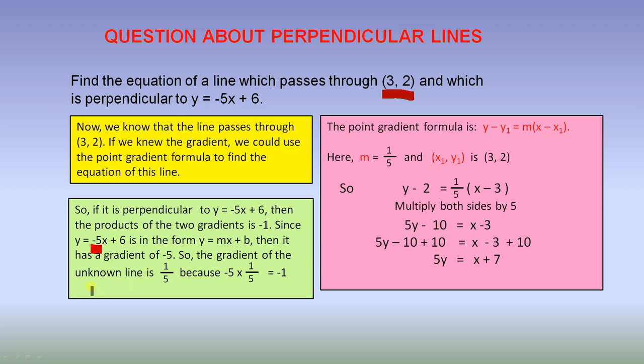So, the gradient of the unknown line is 1/5. Because -5 × 1/5 = -1. Here is the point gradient formula again. And here is the information that we need. We found it. m is 1/5. x1, y1 is (3, 2). We put that information into the point gradient formula.